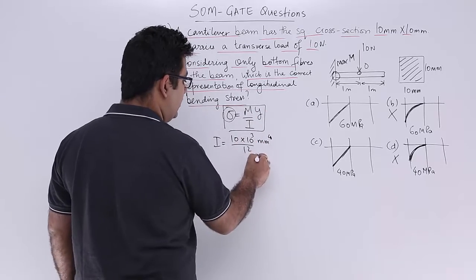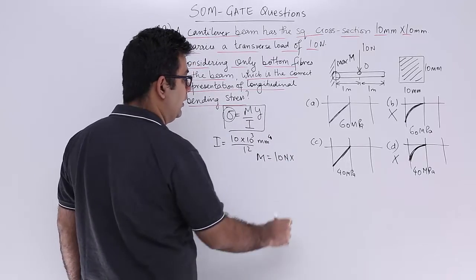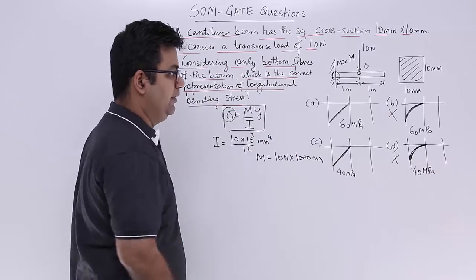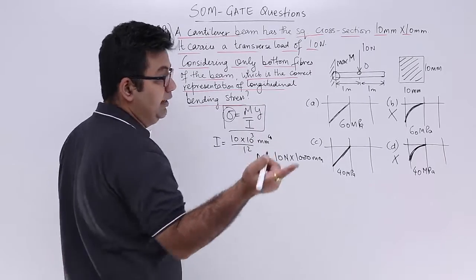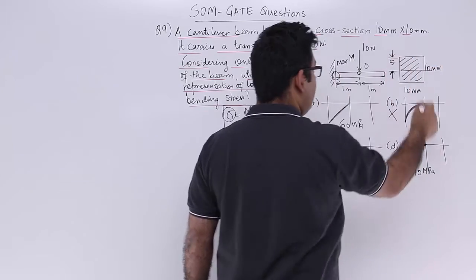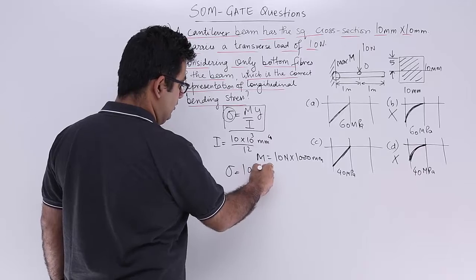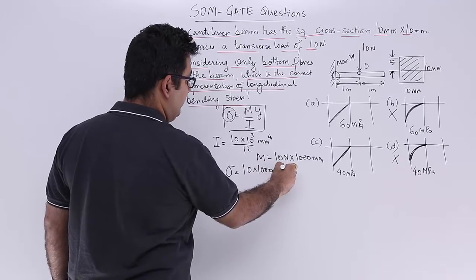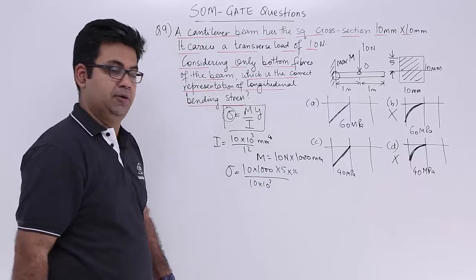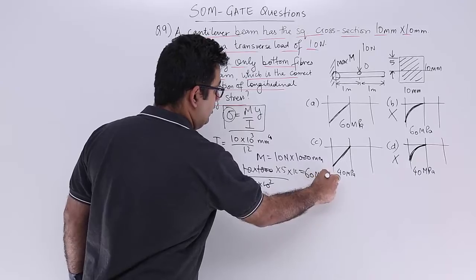So first of all let us find the bending moment. Bending moment would be 10 newton into 1 meter that is 1000 mm. Let us keep it in mm because we would be then having the mega pascal unit. So let us get the value for y also. This is the value for y, 5 mm. So sigma is equal to 10 into 1000 into y which is 5 upon i which is 10 into 10 to the power 3. And 12 will come upside. So this and this gets cancelled. You are left with only 60 MPa.